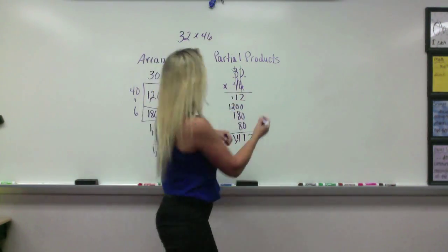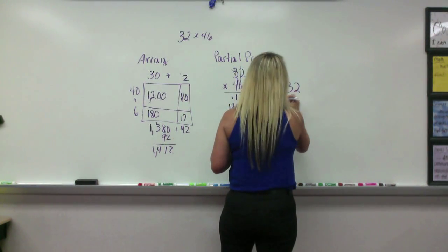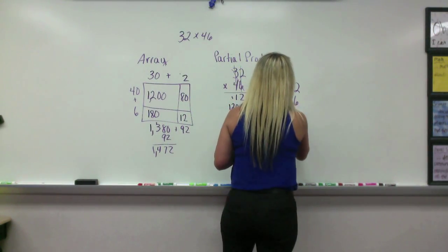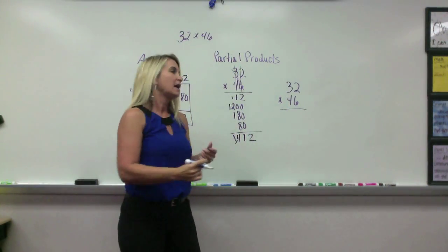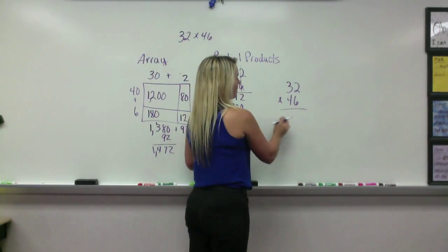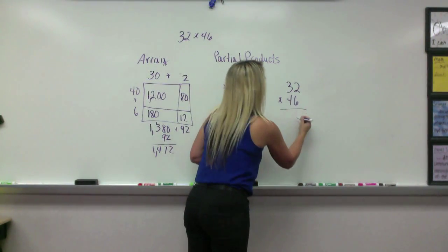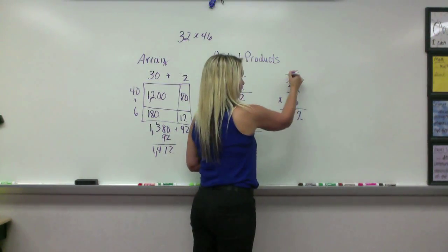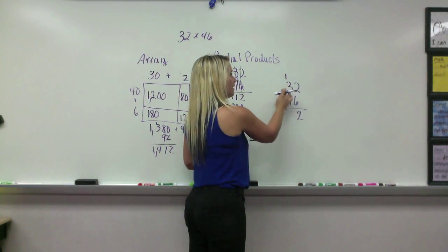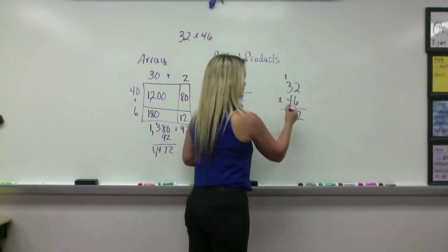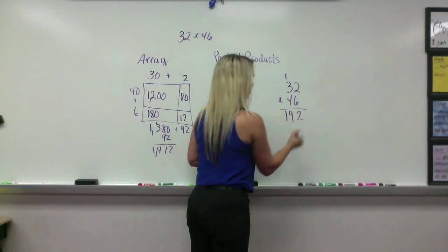Then the last one is the good old-fashioned algorithm that we learned as kids, or many of us learned as kids, this way. And we teach the kids pretty much the same way we learned. 6 times 2, so we multiply the ones first. 6 times 2 is 12. And we regroup the 1. 6 times 3 is 18, 19.